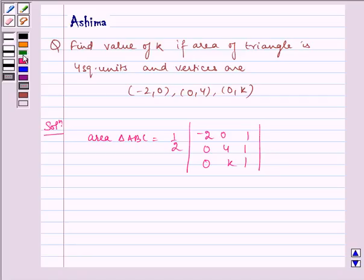Now which I am solving we get half into -2 into (4-k) minus 0 plus 1 into (0-0).